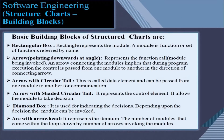The basic building blocks of structure charts include a rectangular box, which represents a module. A module is a function or set of functions referred to by name. An arrow pointing downwards at an angle represents the function call or module being invoked. An arrow connecting the modules implies that during program execution, the control is passed from one module to another in the direction of the connecting arrow.